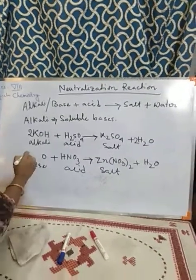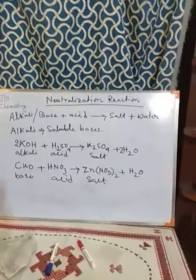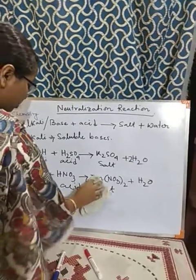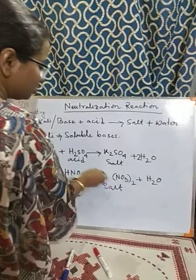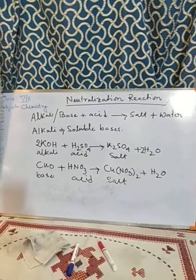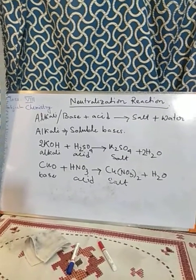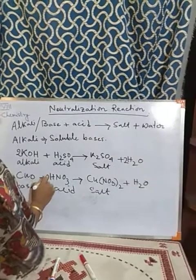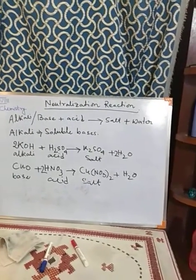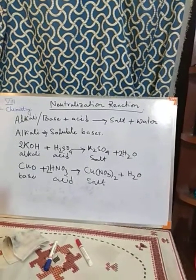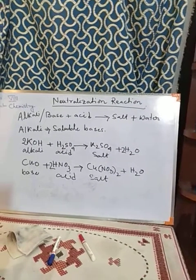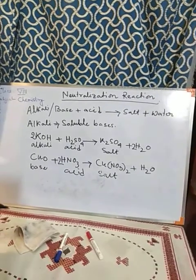Instead of zinc oxide, if we take copper oxide (CuO) — which is also a base — and add nitric acid (HNO3), we get copper nitrate and water. To balance it, we need to take 2HNO3. So these are neutralization reactions where alkali or base neutralizes the acid, or the reverse — acid neutralizes the alkali or base — to give a salt and water.